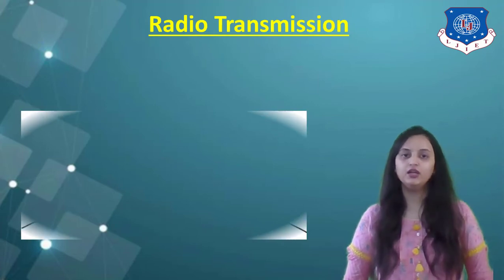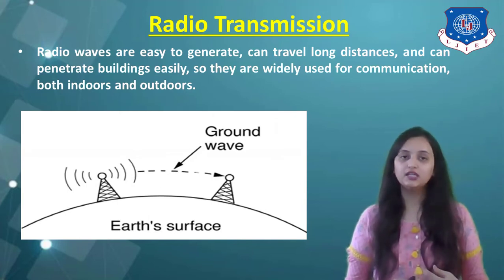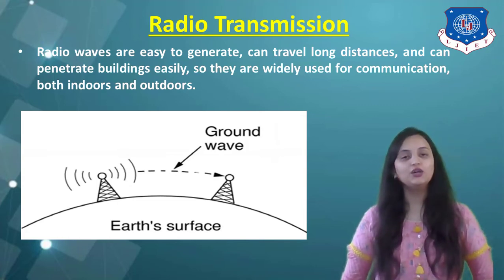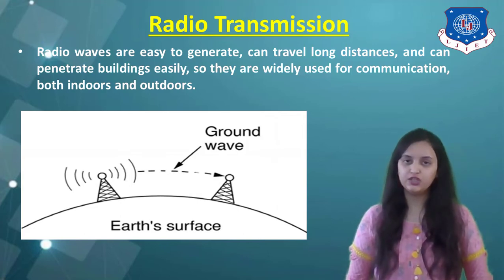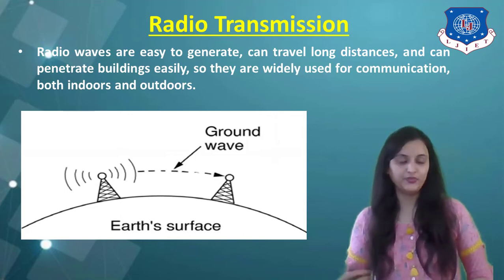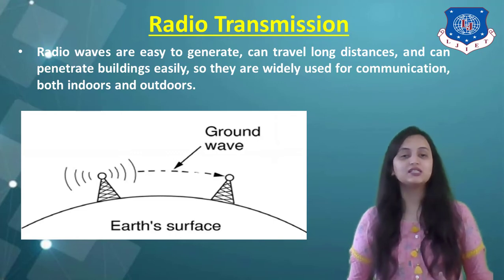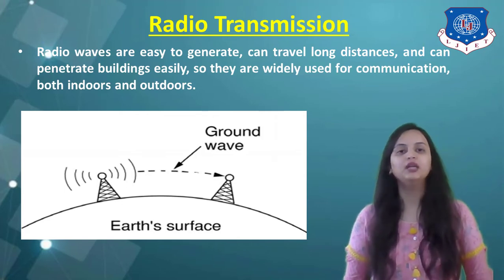Next is radio transmission. Radio waves are easy to generate, can travel longer distances, and can penetrate buildings easily. They are widely used for communications both indoors and outdoors. FM radio stations use radio wave transmission. A diagram shows ground wave transmission using an antenna along the earth's surface. In radio broadcasting, different frequency ranges are allocated to different stations — for example, FM Radio 1 may be tuned at 95 MHz and Radio Mirchi at 98.3 MHz. These are the tuned frequencies for particular FM ranges.